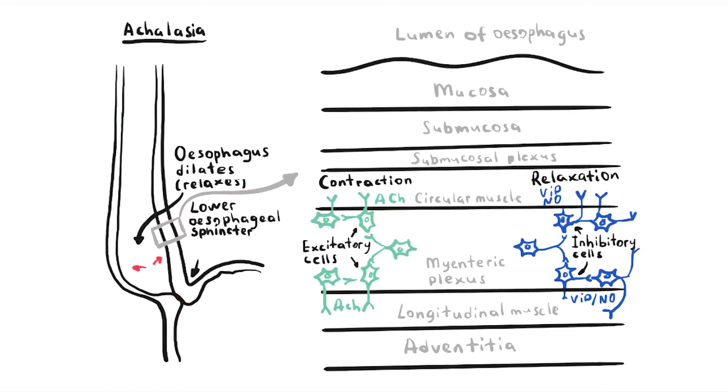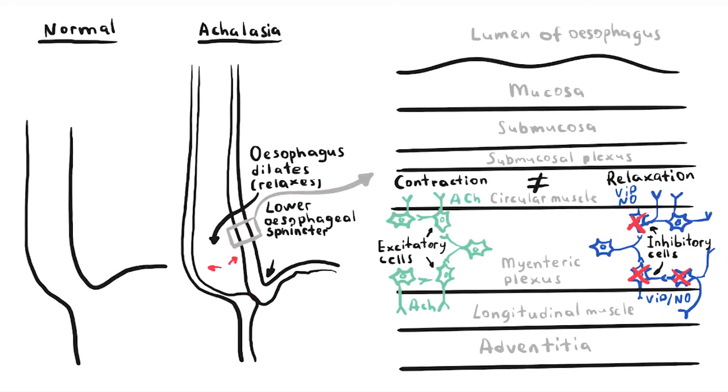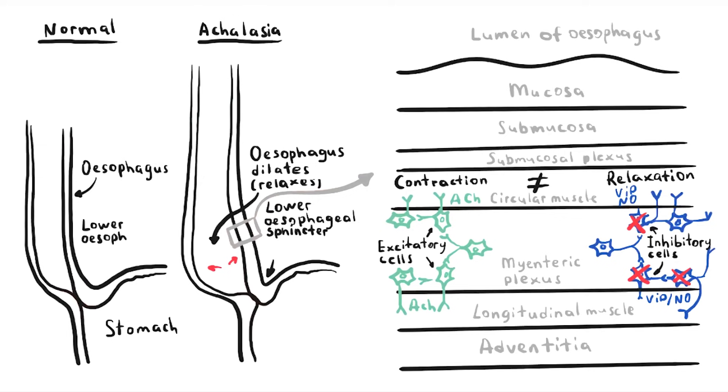However, in the absence of vasoactive intestinal peptide and nitric oxide, due to inhibitory cell destruction, acetylcholine from the excitatory neurons is unopposed. The result of this imbalance is the failure of the lower esophageal sphincter to relax, due to uninhibited contraction and loss of distal esophageal peristalsis.